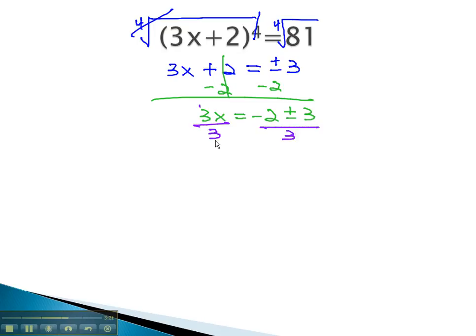Dividing both sides by 3 will isolate the x, giving us x equals negative 2 plus or minus 3 over 3.